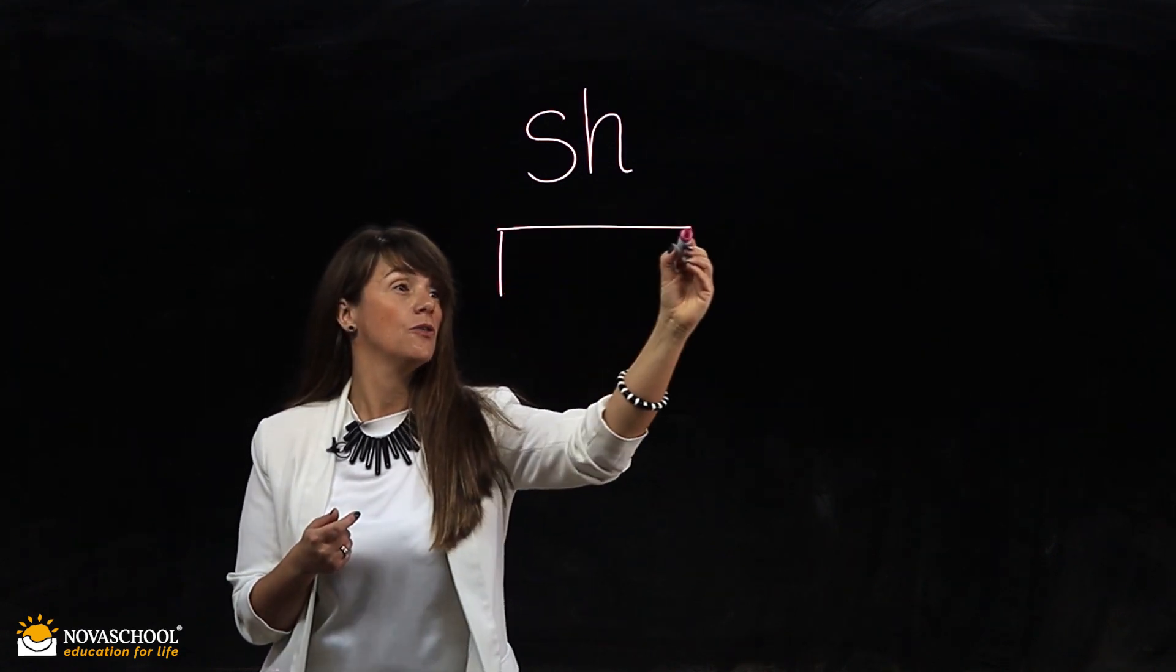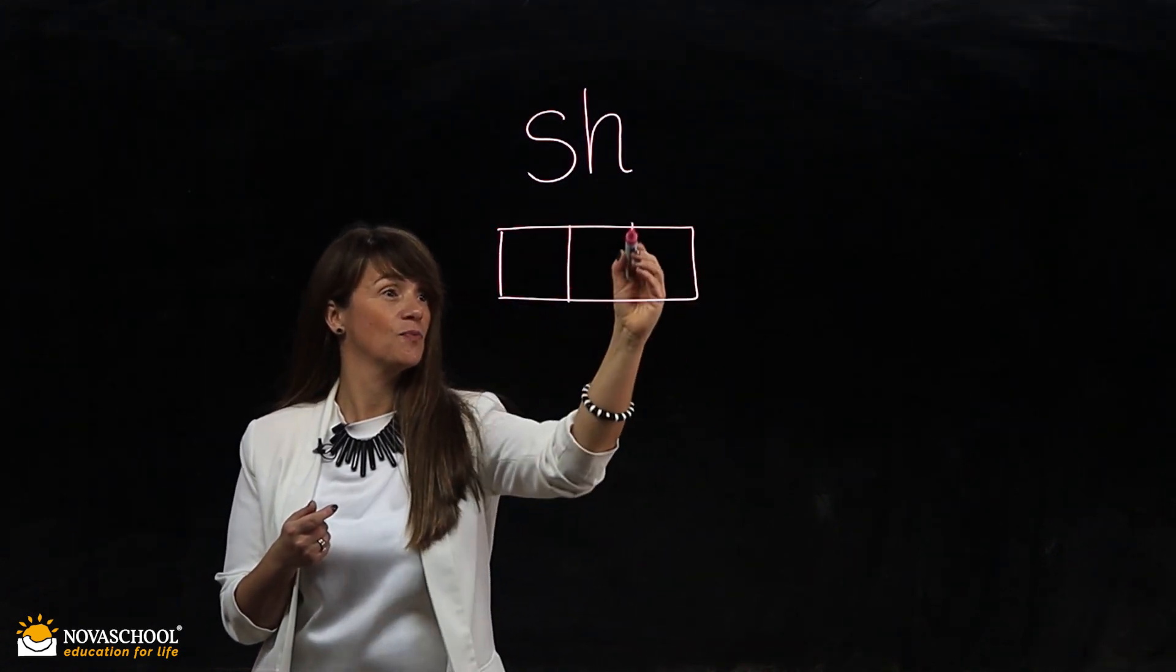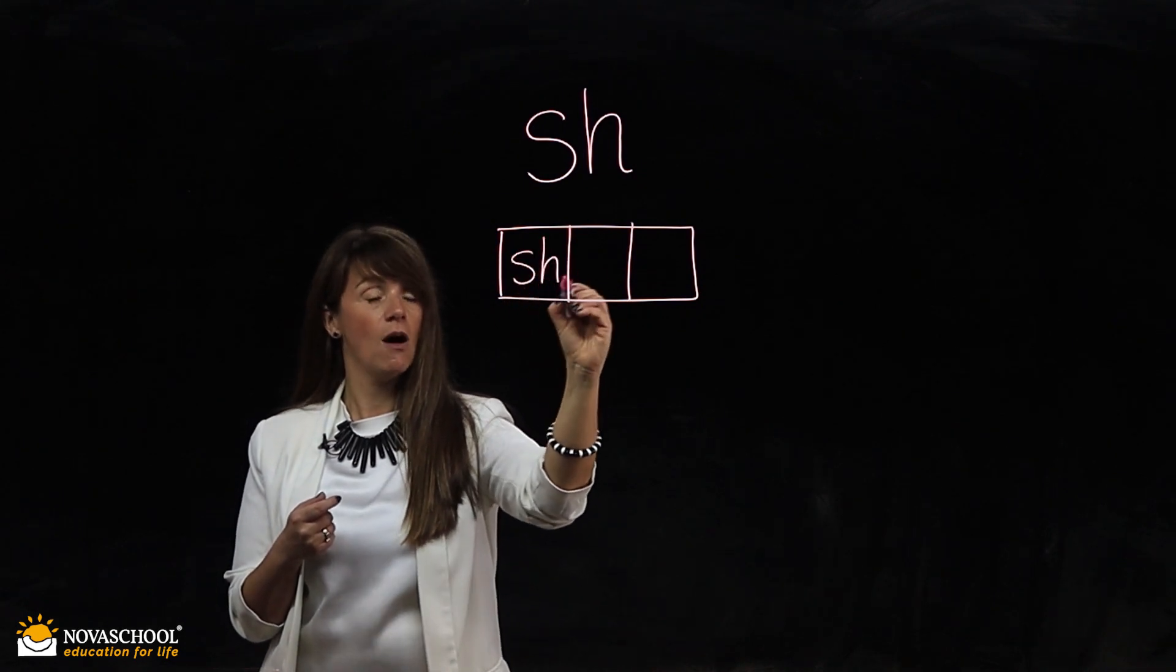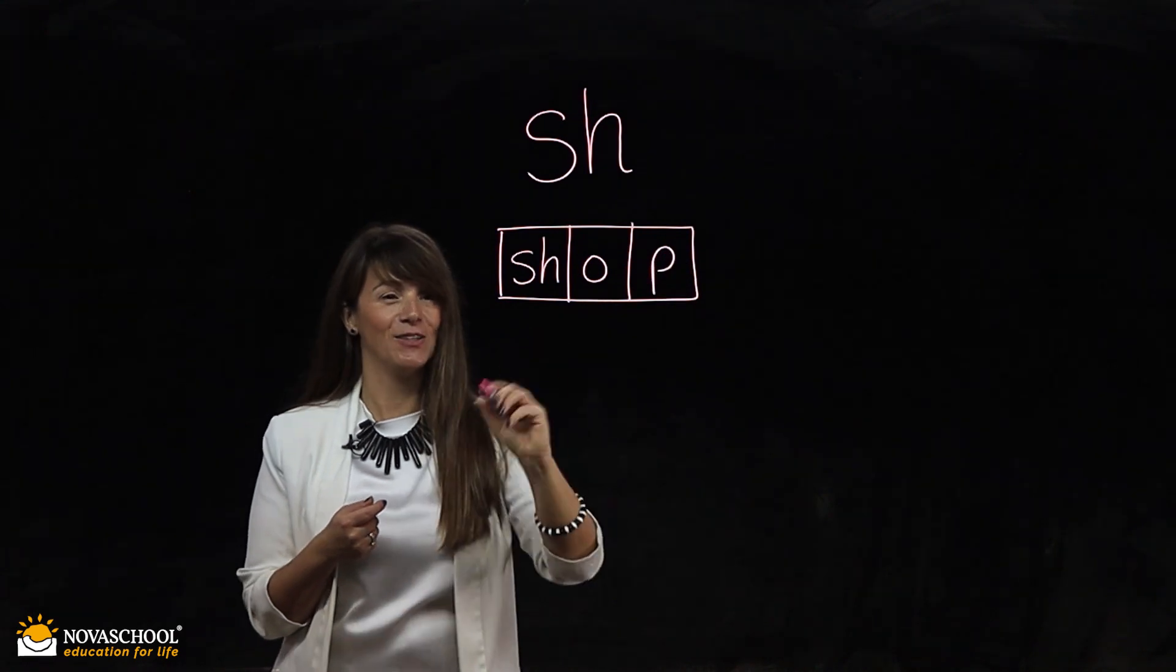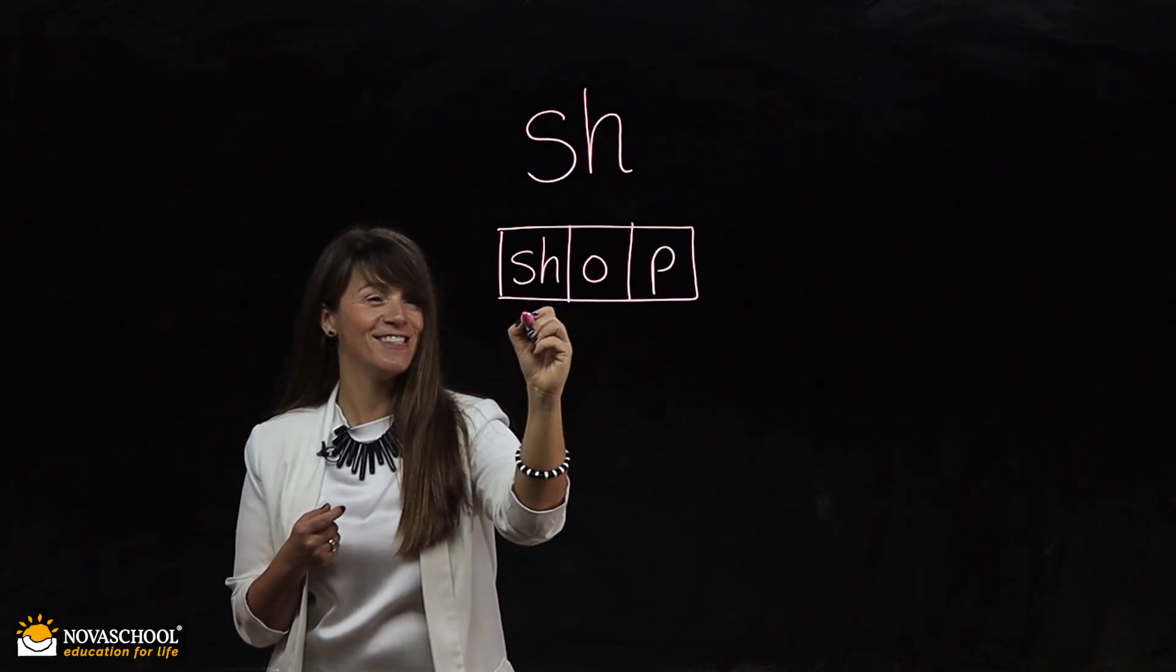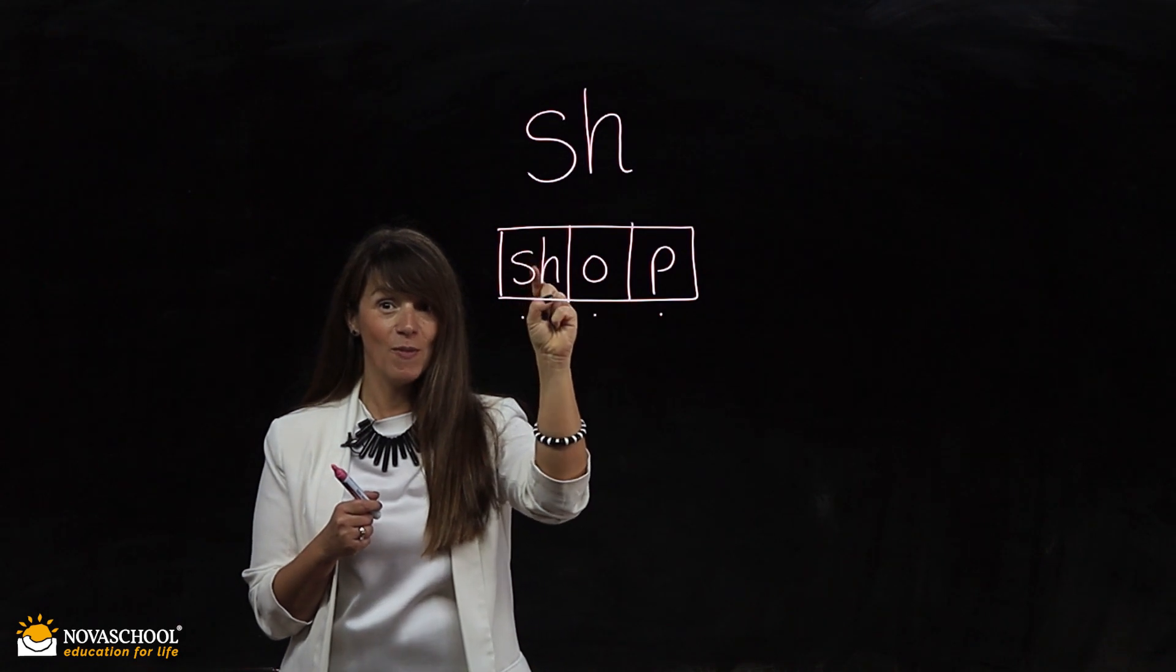Okay, so we're going to do three boxes. Here we go. Shh, o for our middle sound, and p. Well done. Let's put our sound buttons. There we go.